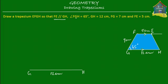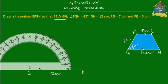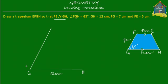Next we have to draw an angle of 65 degrees at G. We take a protractor, move it to G, and mark 65 degrees. Between 60 and 70, midway is 65. We mark a point there, then start from G, make a line passing through 65 degrees, and remove the protractor. This angle here is 65 degrees.